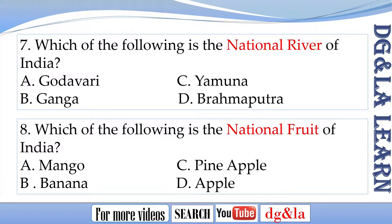Question 7: Which of the following is the national river of India? The options are A. Godavari, B. Ganga, C. Yamuna, D. Brahmaputra.